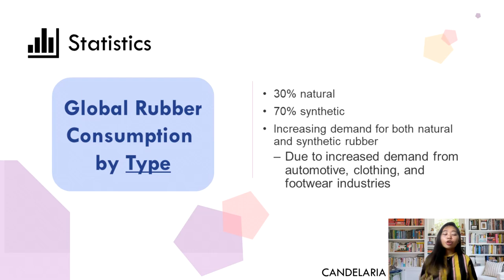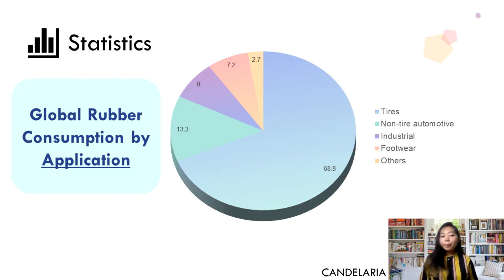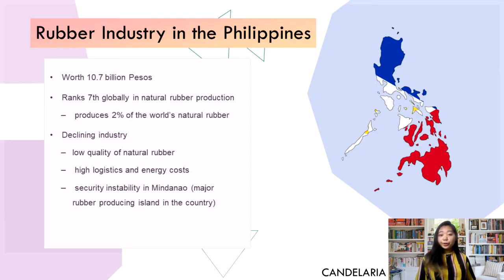For global rubber consumption, synthetic rubber accounts for 70 percent while natural rubber comprises 30 percent. The demand for both types is increasing due to growing demand from the automotive, clothing, and footwear industries. In terms of application, rubber is most used for automobile tires, followed by non-tire automotive rubber parts such as oil seals, refrigerator hoses, and gaskets, with industrial, footwear, and other applications rounding out the list.